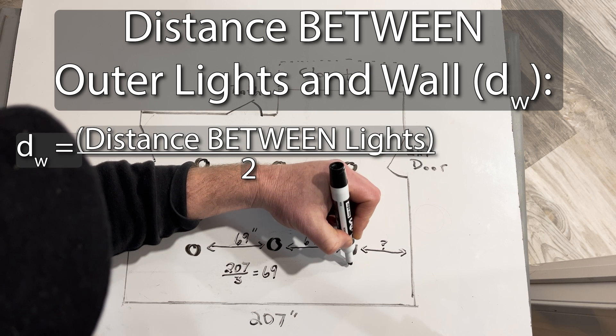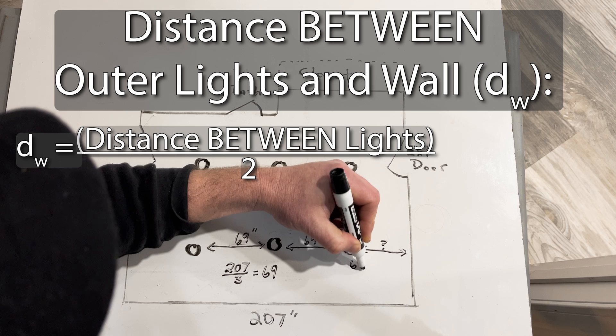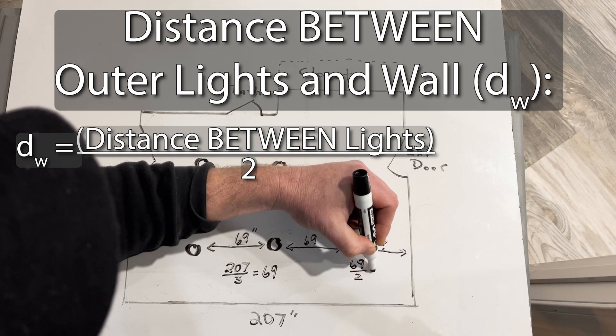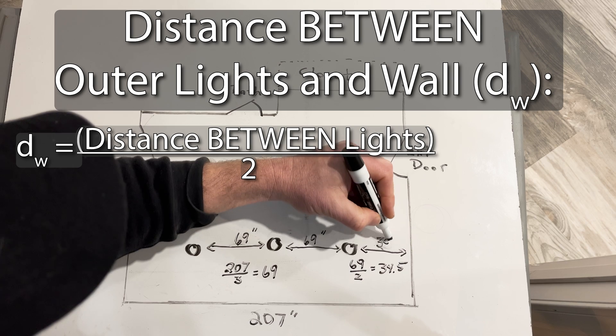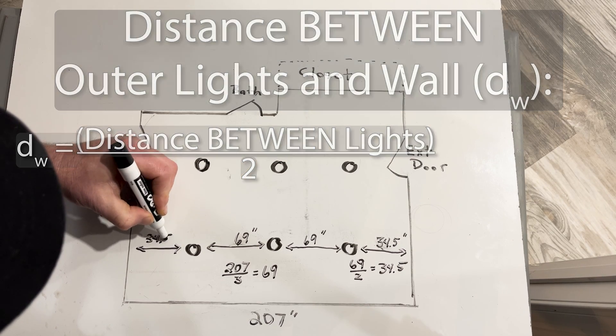In this row, we just calculated the distance between lights to be 69 inches. Dividing by two gives us 34 and a half inches. So the distance from the outside lights in the row to the wall is 34 and a half inches.